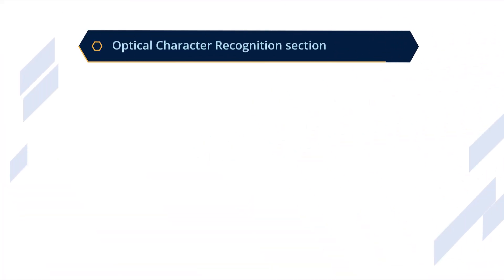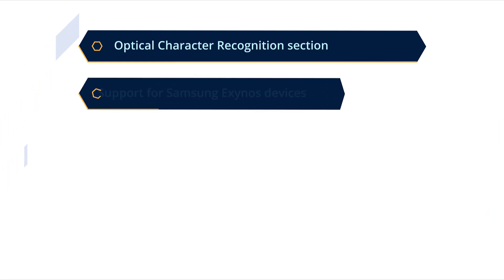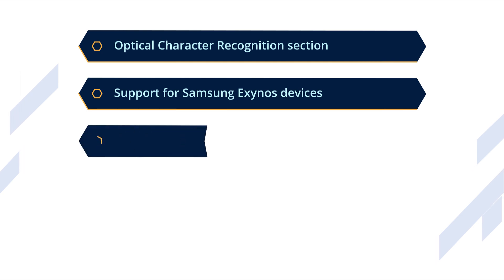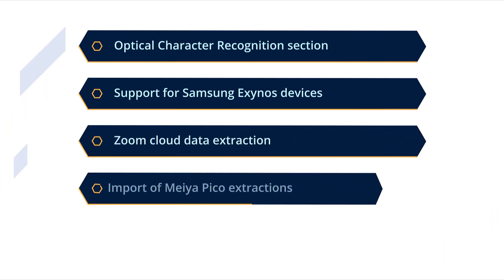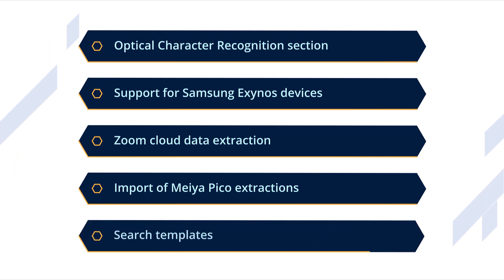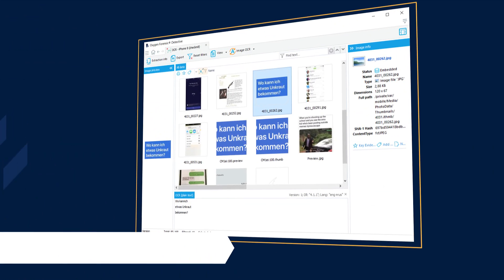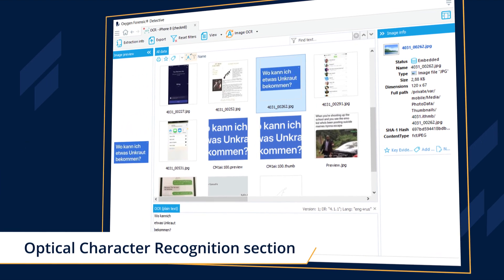you can convert images of printed text into machine-encoded text, acquire Samsung devices with Exynos chipset, extract cloud data from Zoom, import and parse MEA PICO extractions, create and use search templates, and use the new OCR section to recognize text inside images.